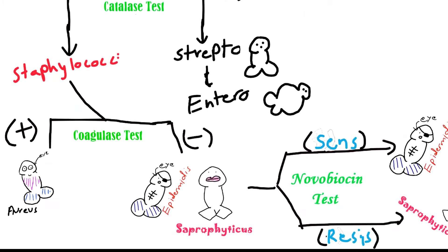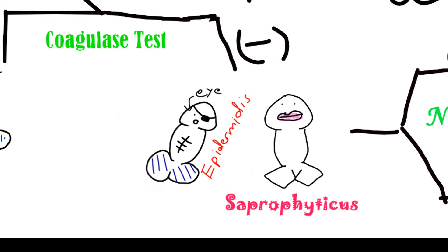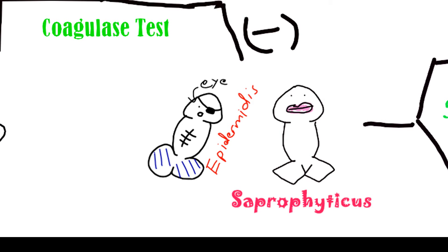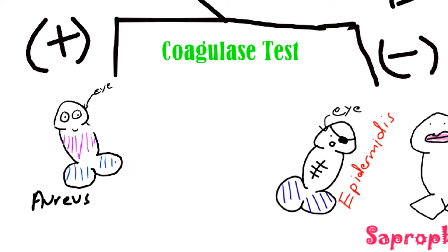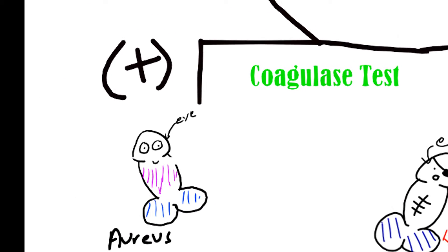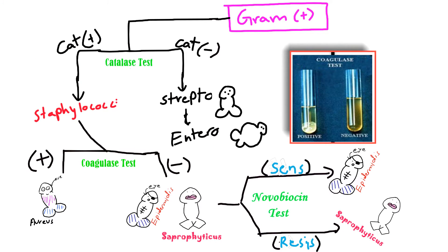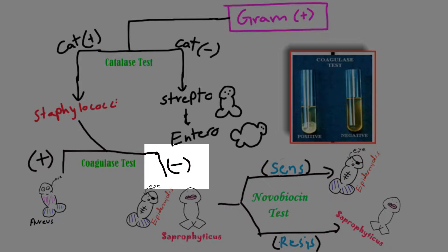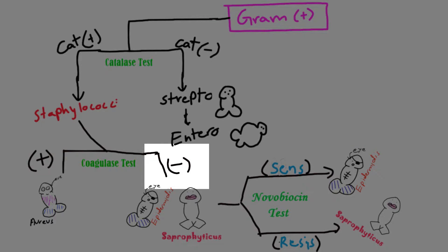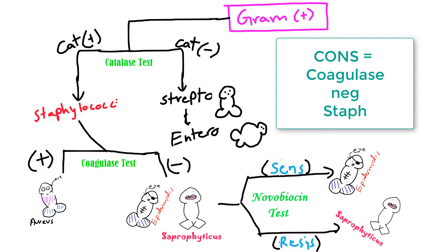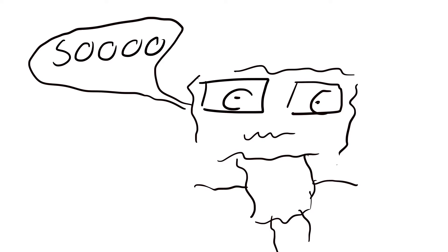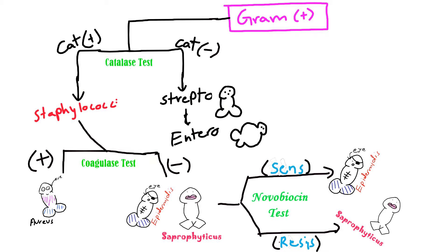The next step is to differentiate Staphylococcus epidermidis from Staphylococcus aureus, and the way we do that is the coagulase test. Both Staphylococcus epidermidis and Staphylococcus saprophyticus are coagulase negative, also known as CoNS. So now we just need to differentiate Staphylococcus epidermidis from Staphylococcus saprophyticus.